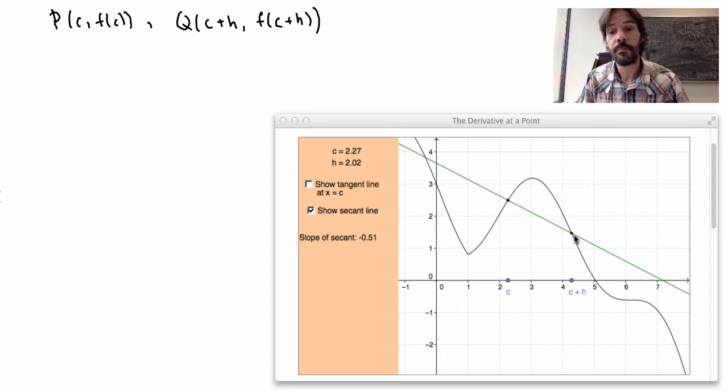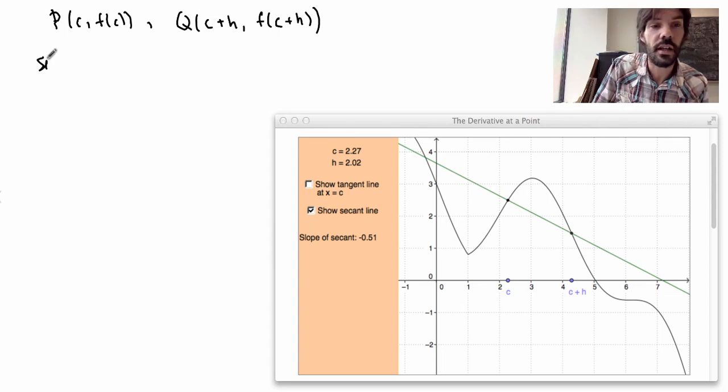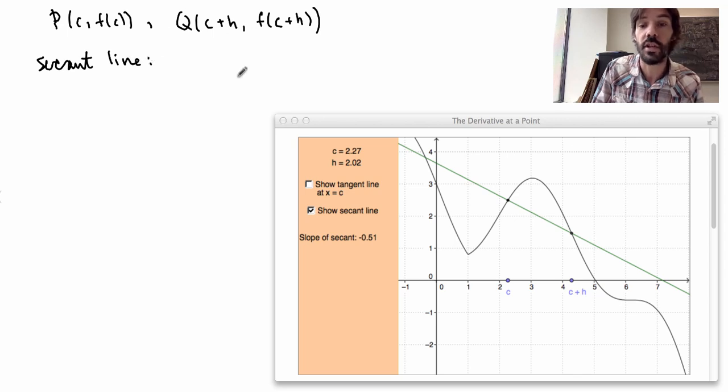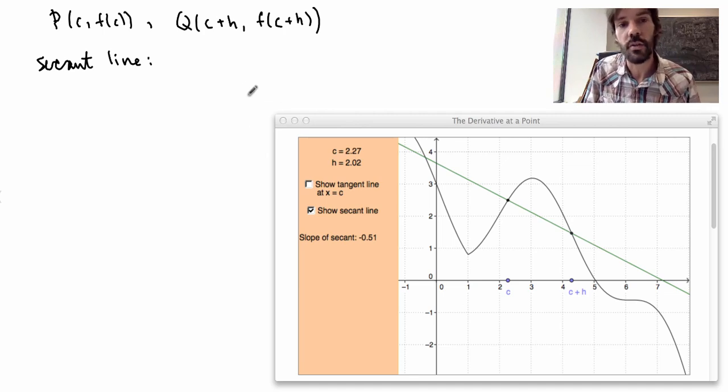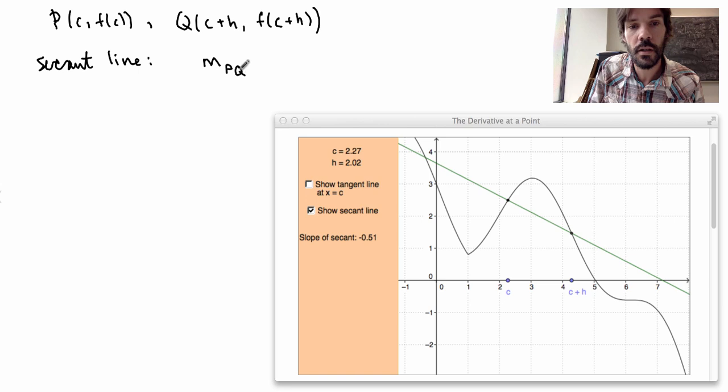I can define the secant line as being this line that is drawn in the picture here, which just goes through these two points. And if I want to write this equation, well the easiest is probably to use the slope formula, so I can write the slope of this line as being just the difference in the y-coordinates over the x-coordinates.